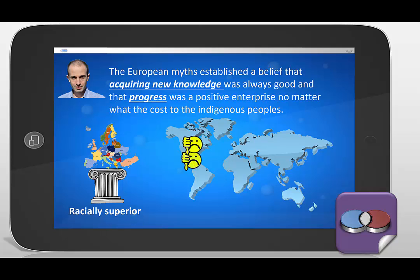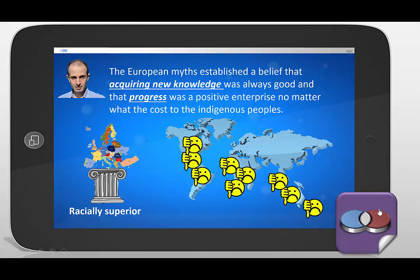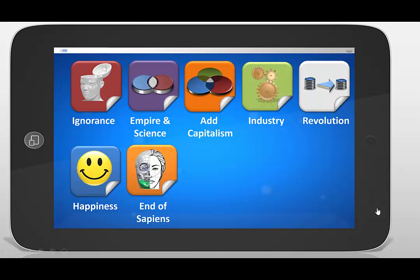European myths were the deciding factor. They established the belief that acquiring new knowledge is always good, and that progress was a positive enterprise no matter what the cost to the indigenous people. The European model did have a racial superiority to it — they didn't take into account the negative experience of all of the indigenous peoples, feeling they were racially superior and allowed to do whatever they did to the indigenous people. That's where Harari goes with regards to the first two sections of the scientific revolution.